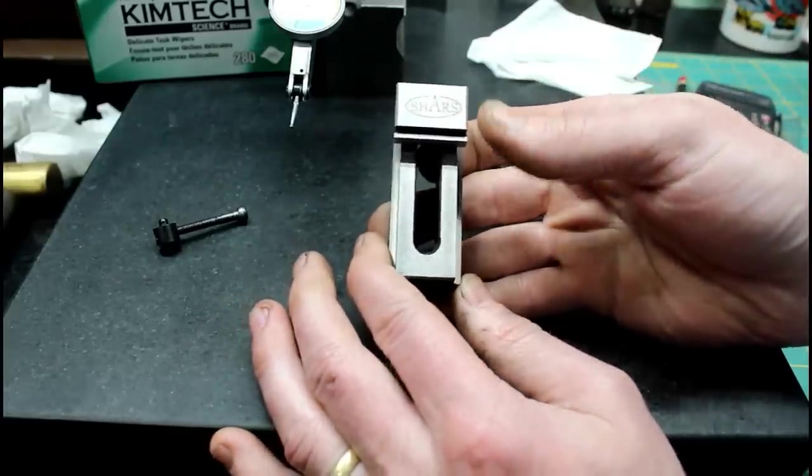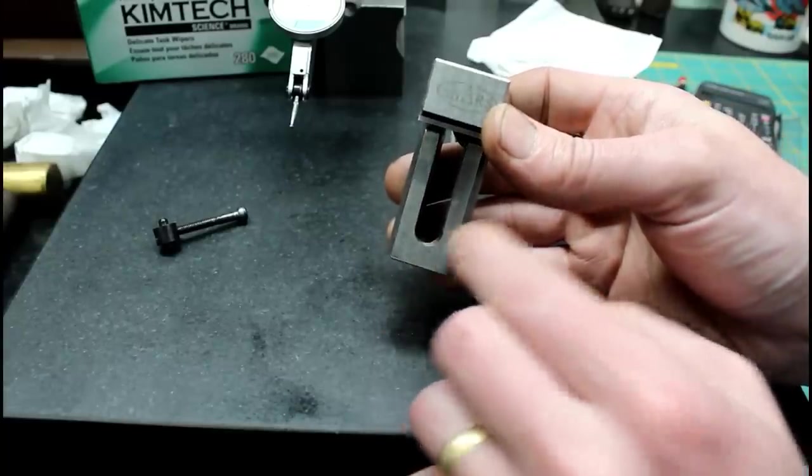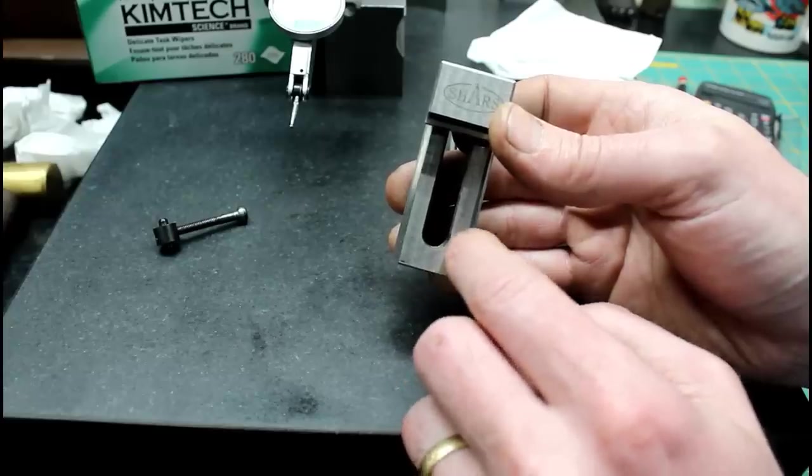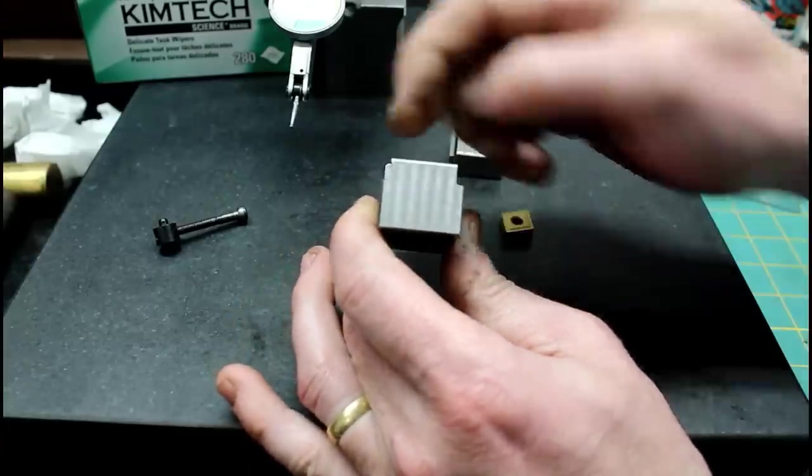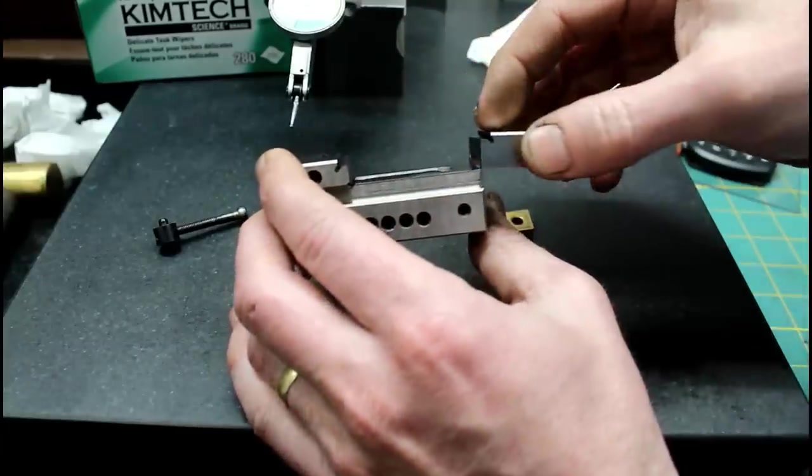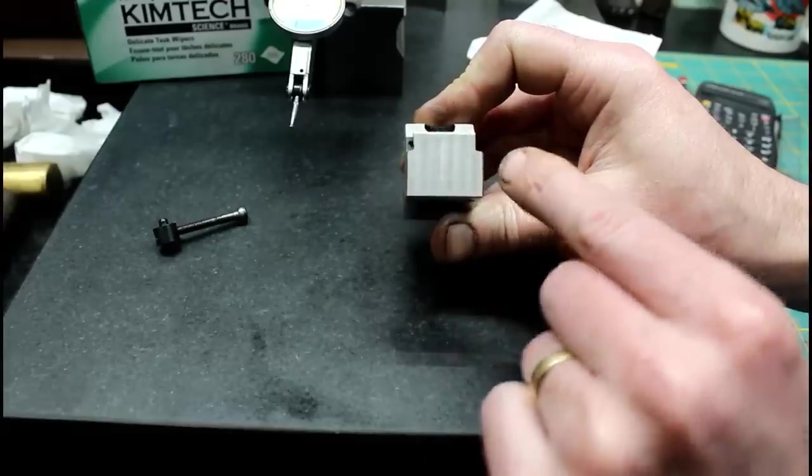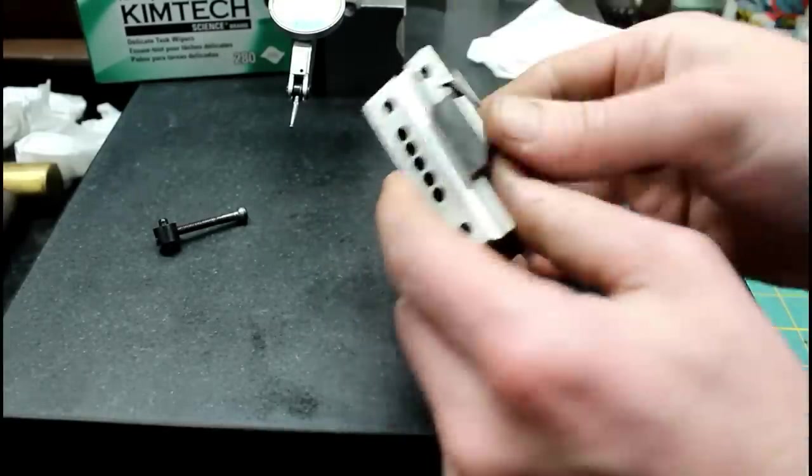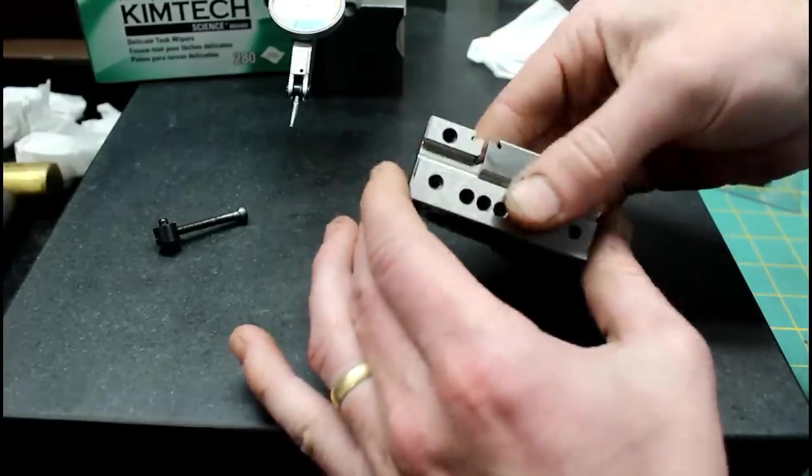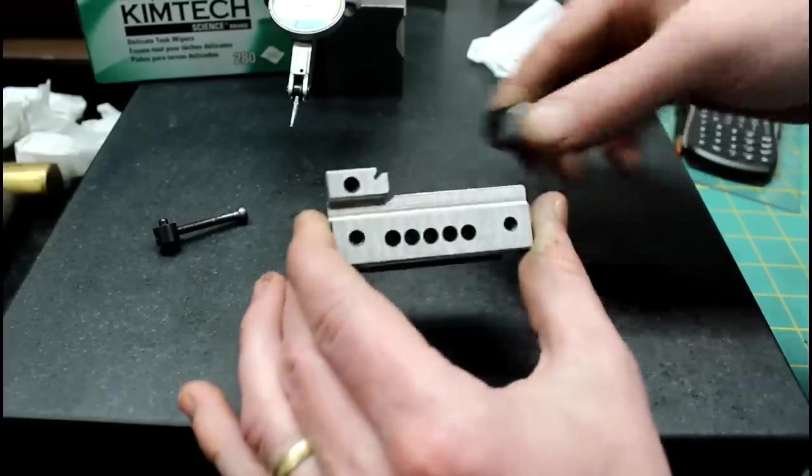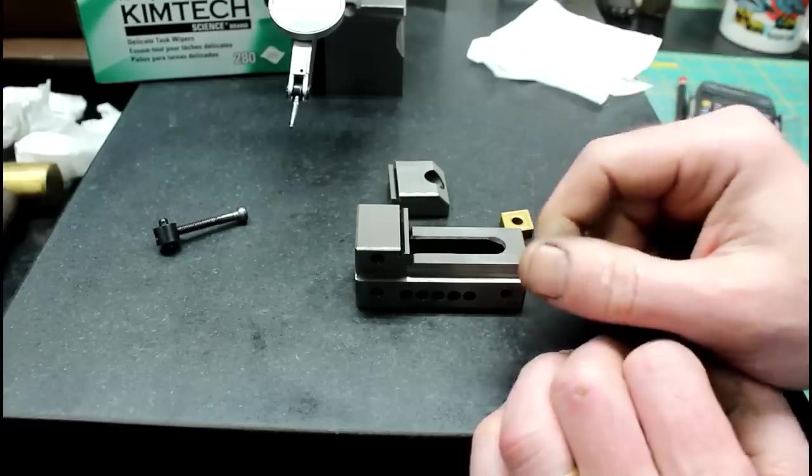Several things are wrong with it that I caught by eye. One is where they deburred this radius here, they got their machine or tool off to one side really bad. Another thing is these reliefs here on the sides for the movable jaw. By eye I can tell you that this surface is lower than this one. It's just an error in the vise but not in a critical surface.